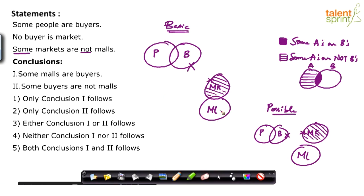They may be malls — some markets may be malls, may not be malls. Keep that in mind while answering questions involving 'some A's are not B's' type statements. Now look at the conclusions. The first conclusion: some malls are buyers. Always refer to the basic diagram first. In the basic diagram itself, malls and buyers do not overlap. You very well know that if a conclusion does not follow the basic diagram, it is wrong. So conclusion number one is wrong.